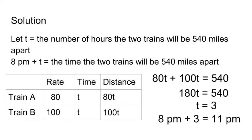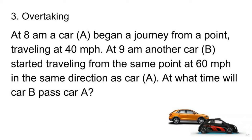Problem 3. At 8 a.m., car A began a journey from a point traveling at 40 mph. At 9 a.m., another car B started traveling from the same point at 60 mph in the same direction as car A. At what time will car B pass car A?